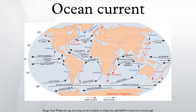Deep ocean currents are driven by density and temperature gradients. Thermohaline circulation, also known as the ocean's conveyor belt, refers to the deep ocean density-driven ocean basin currents. These currents flow under the surface of the ocean and are thus hidden from immediate detection; they are called submarine rivers.